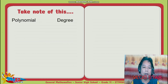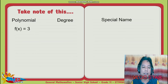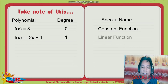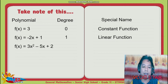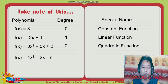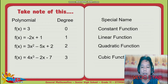Take note of this. F of X equals X squared minus 5X plus 2 — the degree is 2 and the special name is quadratic function. F of X equals 4X cubed minus 2X minus 7 — the degree is 3 and the special name is cubic function. These are the different polynomials with their different degrees and special names.